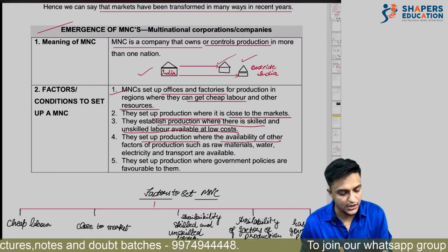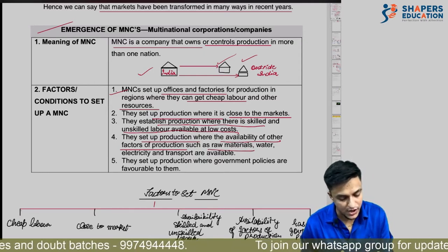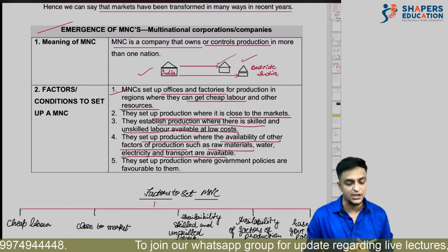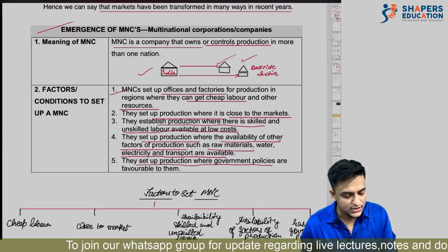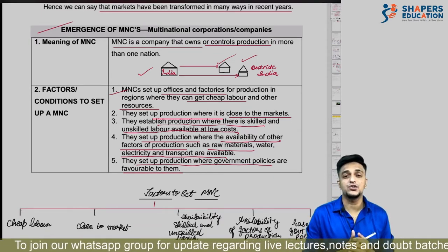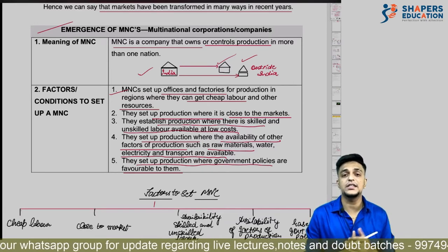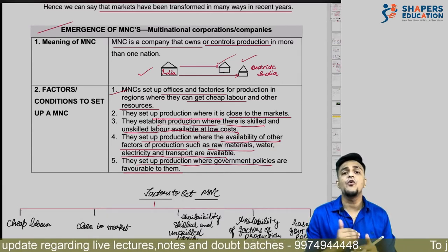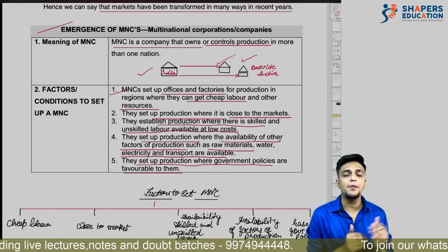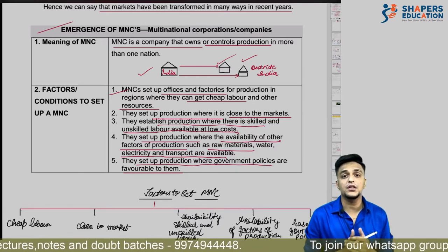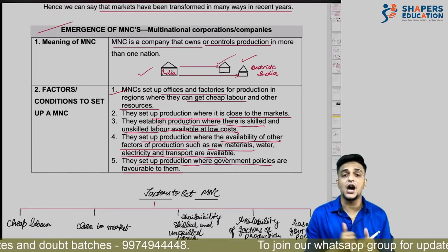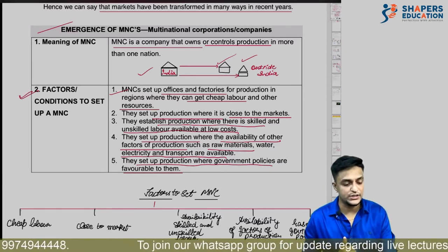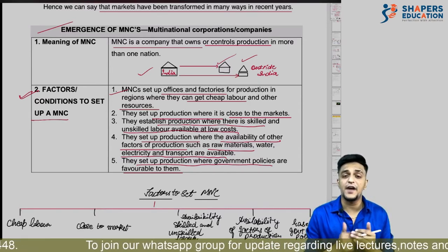Next, they set up where availability of other factors of production — raw materials, water, electricity, and transportation facilities — is good and available at cheap rates. And MNCs set up production where government policies are favorable to them — where taxes and other costs are low, and government policies are business-friendly.